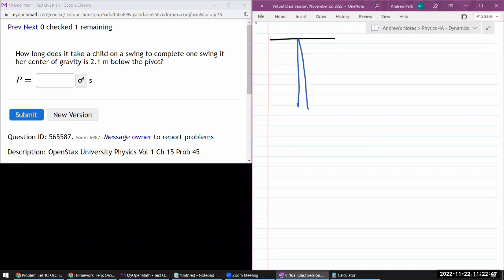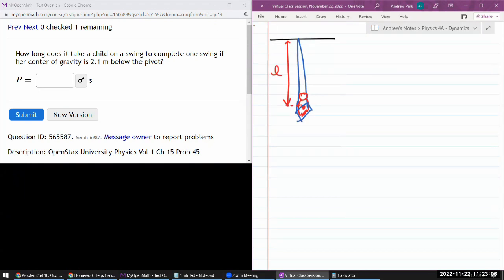I'm imagining a swing, there's some kind of a rope or something, and I guess I'm justified in saying that it's a rope of negligible mass, and it says that the center of mass of the child is at some distance L below the pivot.